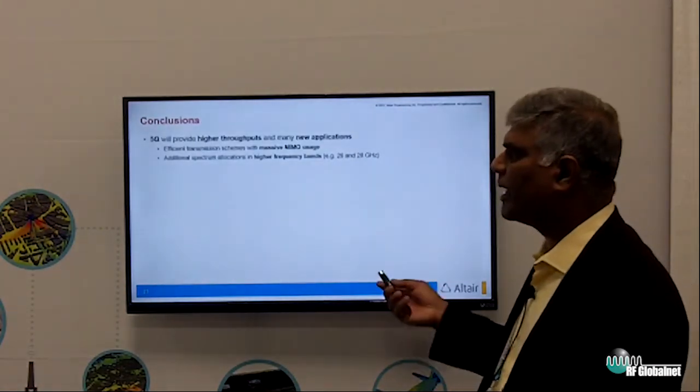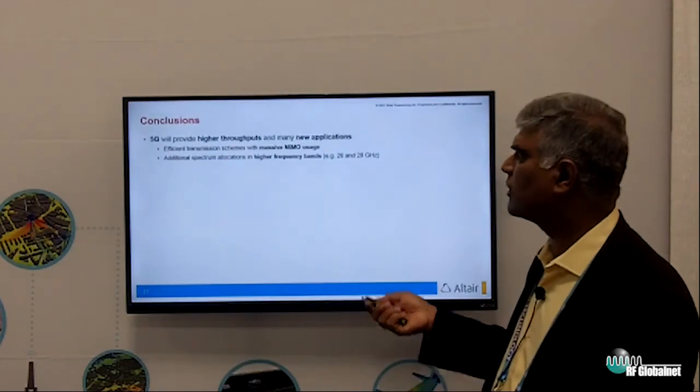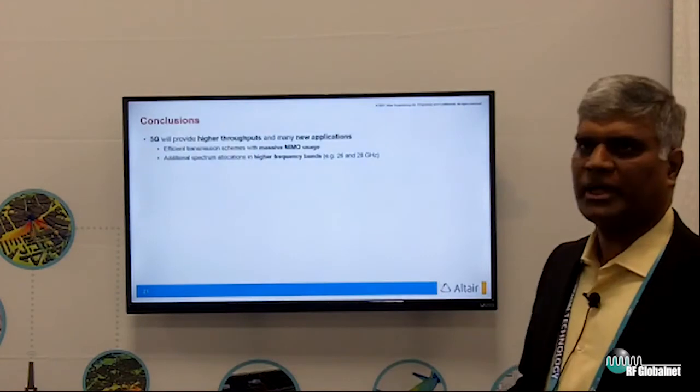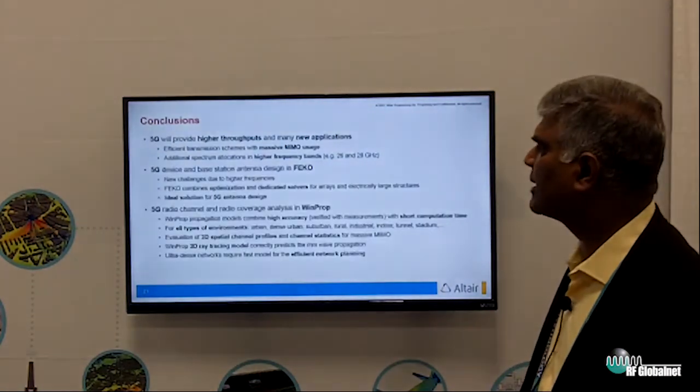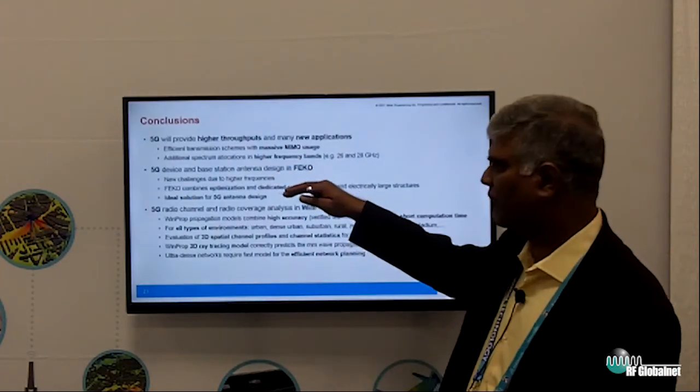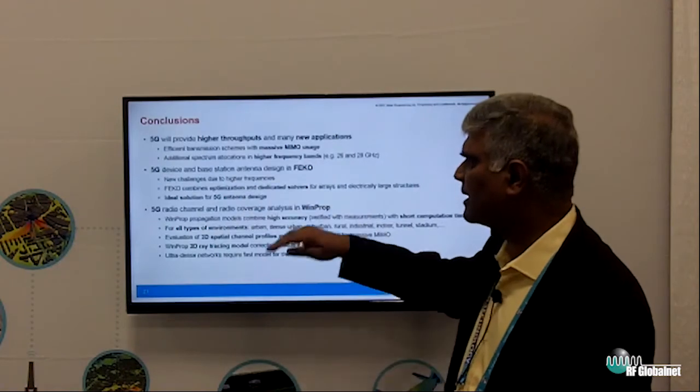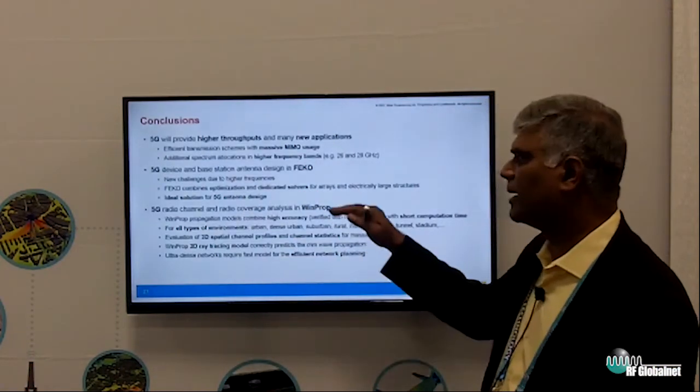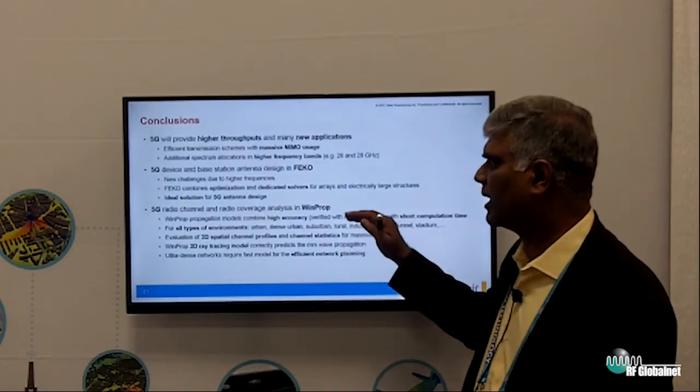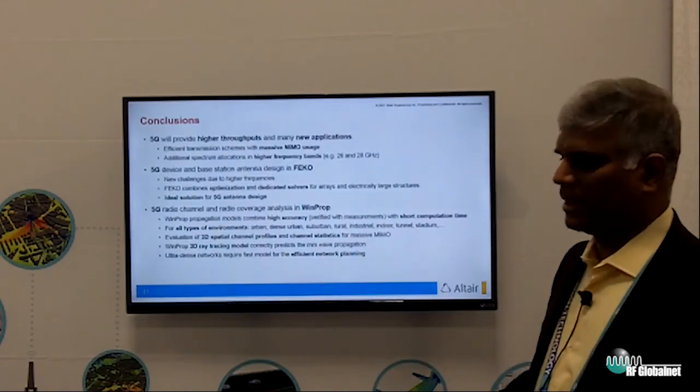So as a conclusion, 5G will provide higher throughputs. To have those higher throughputs, one has to use massive MIMO and also at a higher frequency, 26 to 28 GHz, which means one needs to have the capability to design the antennas. We can do that using FEKO at the device level as well as at the base station level. And one can use WinProp, which is the propagation analysis tool to do the analysis of network planning and analysis of the 5G radio coverage.